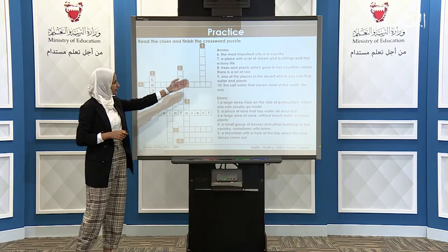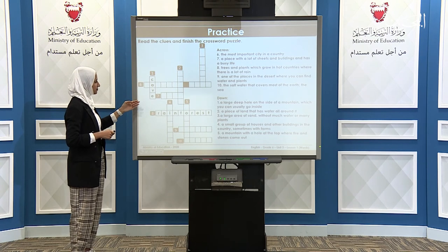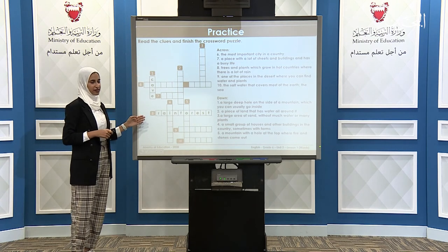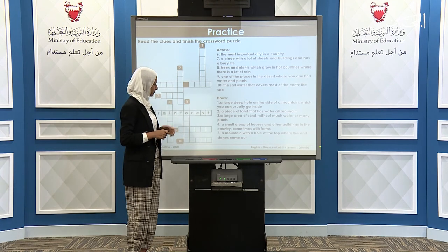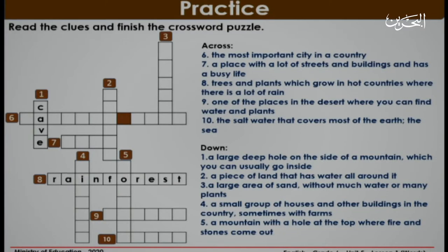In this activity, you have to read the clues and then finish the crossword puzzle. Number one and number eight are done for you. Now let's look at number one — down. A large deep hole on the side of a mountain which you can usually go inside. The answer is cave. It's written from up to down.